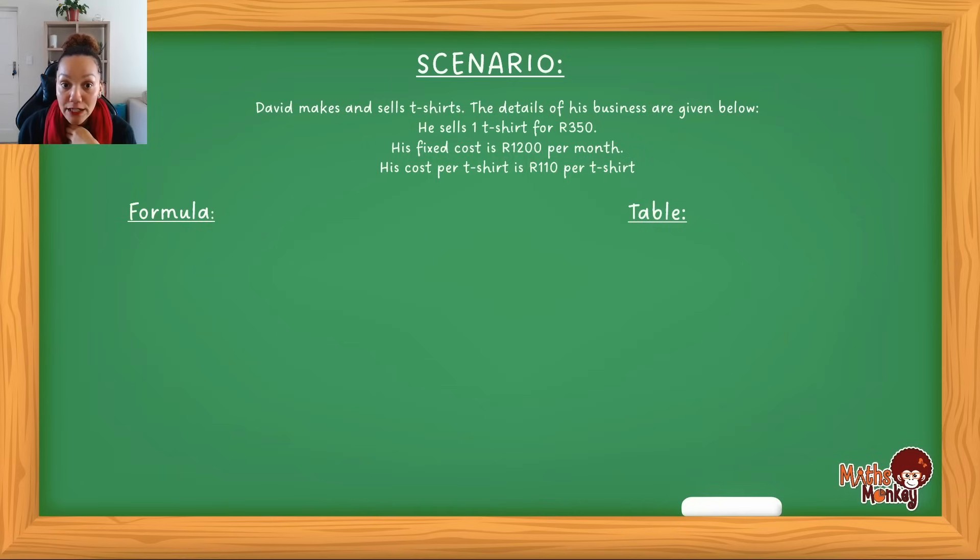So let's first look at the scenario that I'm going to use to show you this. The first one says, David makes and sells t-shirts. The details of his business are given below. He sells one t-shirt for 350 rand. So already my brain says, this is the income I'm going to get when I sell one t-shirt. So anything that has to do with income will then be looking at that 350.